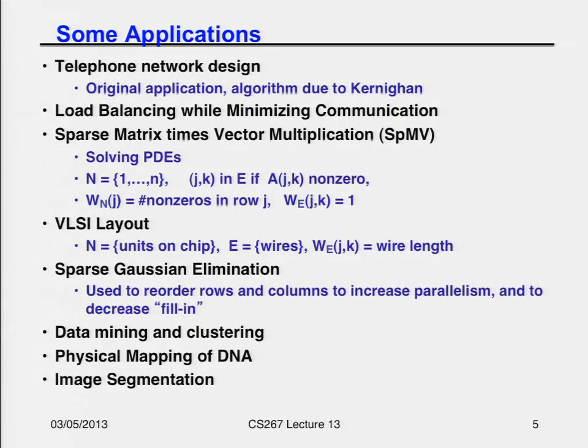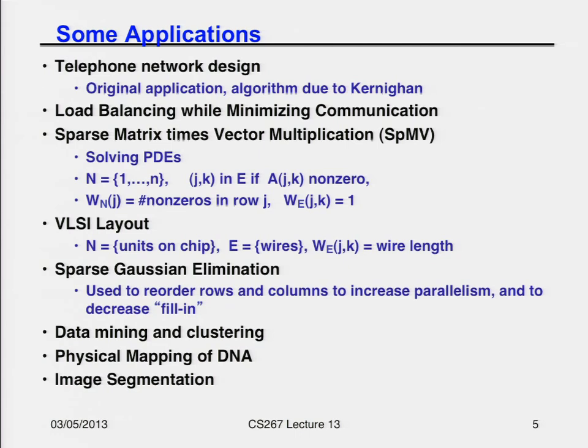Here are some applications. The very first application for which this algorithm was invented was designing the telephone network, invented by a guy named Kernighan. He also wrote the book Kernighan and Ritchie C, invented the word Unix, and wrote the first Hello World program. We're actually going to use an algorithm of his called Kernighan-Lin later in the lecture. The second application is load balancing while minimizing communication, and my canonical example is going to be sparse matrix-vector multiplication.